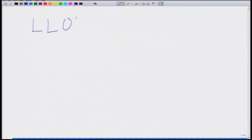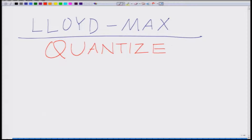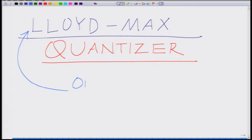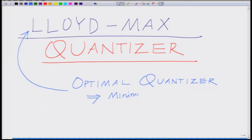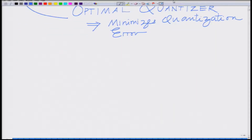The Lloyd-Max quantizer is really a scheme to design the optimal quantizer. The Lloyd-Max quantizer gives what is known as the optimal quantizer — optimal meaning it minimizes the quantization error, giving the lowest quantization error.